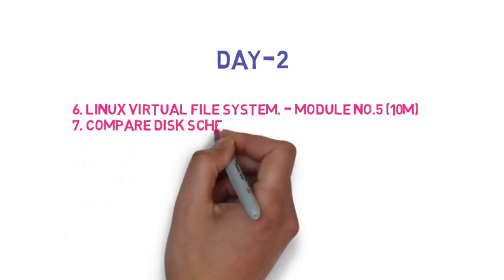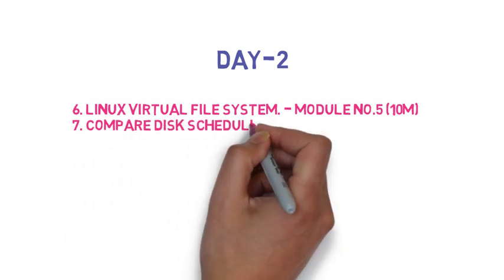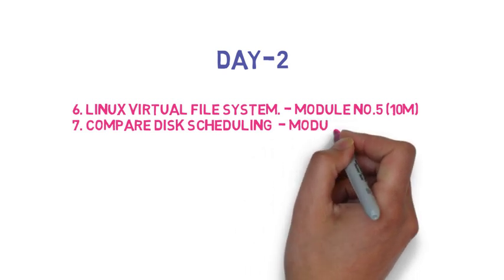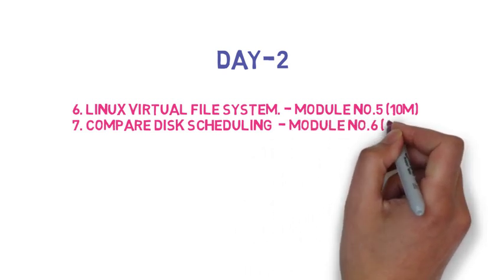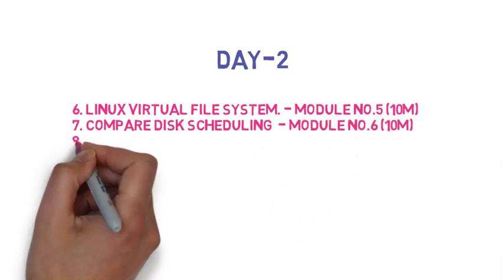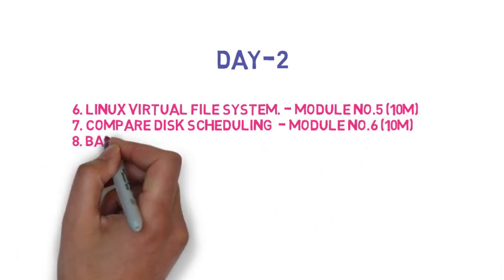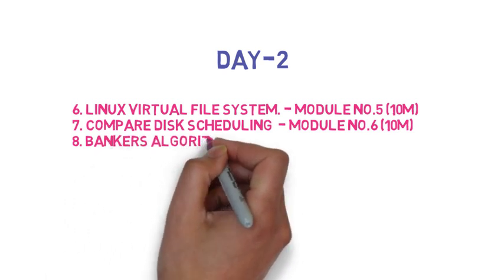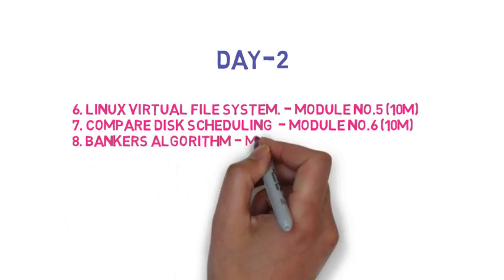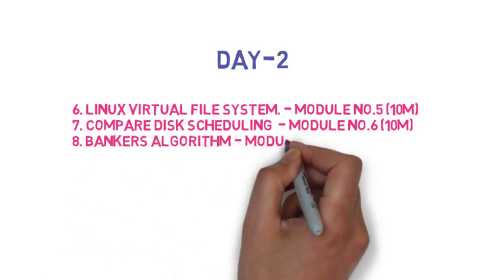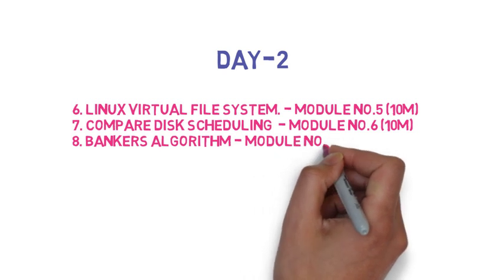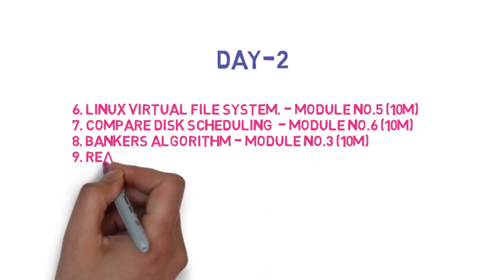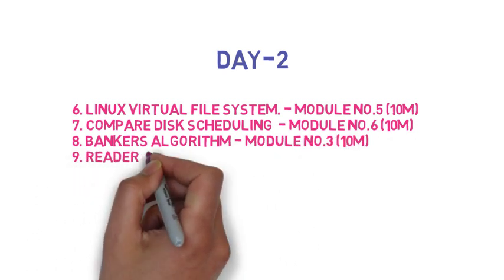The eighth question is: explain data structures used in the Banker's Algorithm with an example. This can come as theory or a numerical problem and may range from 5 to 10 marks. The ninth question is the reader-writer problem using semaphores, which can come for 10 marks.